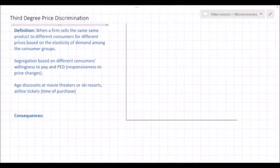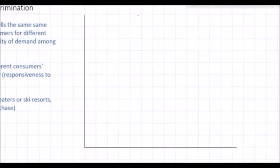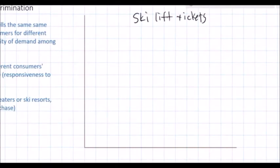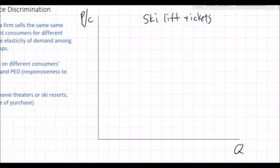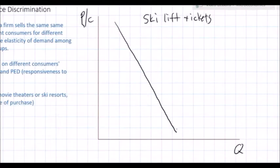For a graph today I'm going to look at prices for ski lift tickets — ski lift tickets at a local ski resort. We're going to assume there are two types of consumers: adults and teenagers. Adults have a relatively inelastic demand for ski lift tickets, represented by a relatively steep demand curve. Adults tend to have more disposable income than teenagers, so they're willing to pay more for lift tickets and are less responsive to price changes.